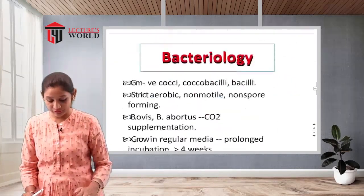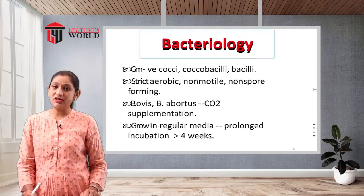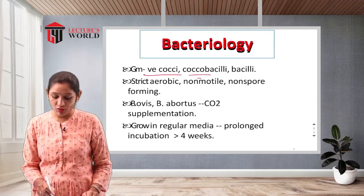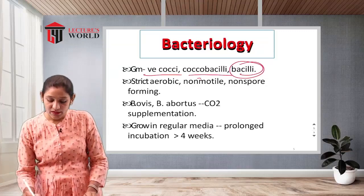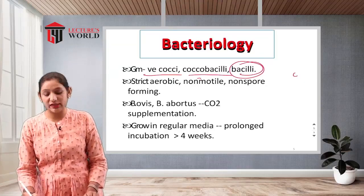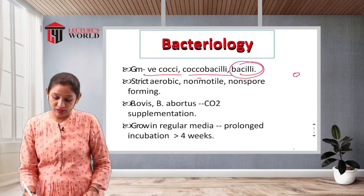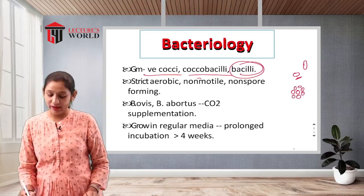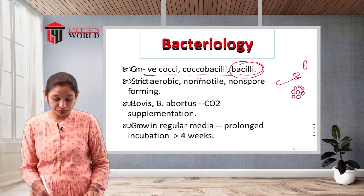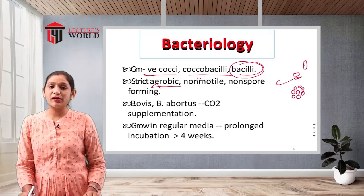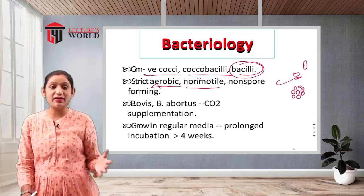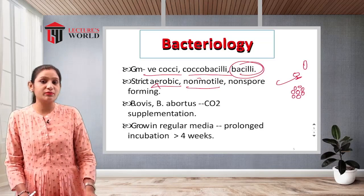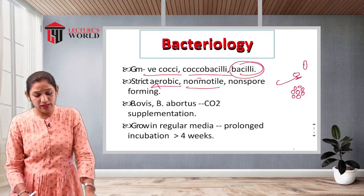Regarding bacteriology, Brucella is gram-negative and coccobacilli in shape — neither a proper coccus nor a pure bacillus, but intermediate. It is strictly aerobic, meaning it requires the presence of oxygen. It is non-flagellated and non-spore-forming. Species such as B. ovis and B. abortus require supplementation with CO2.